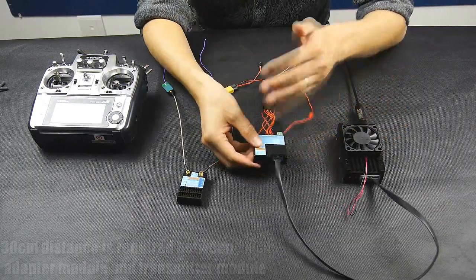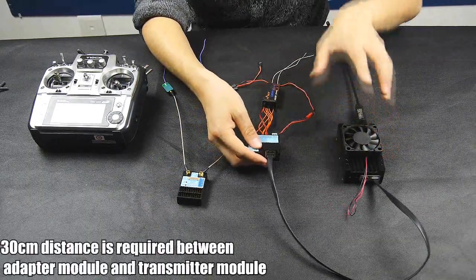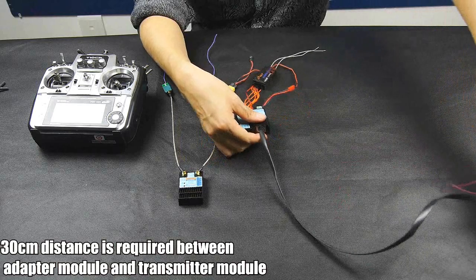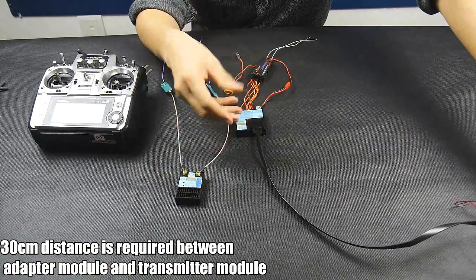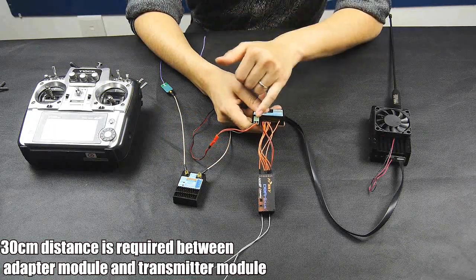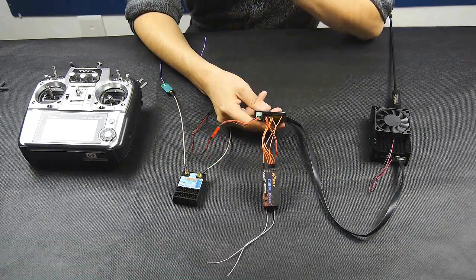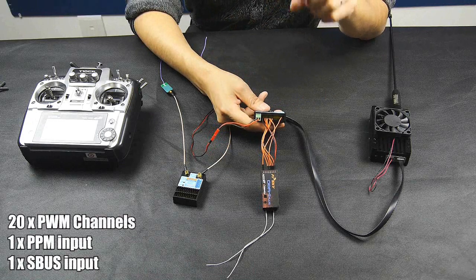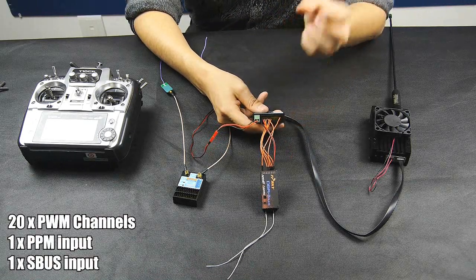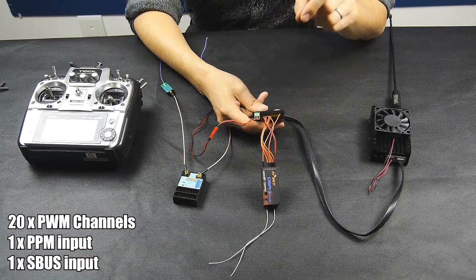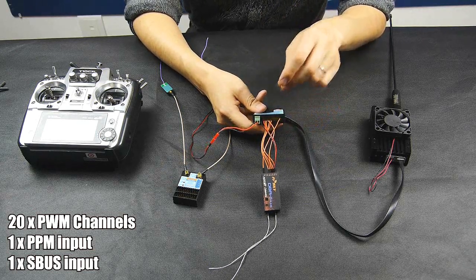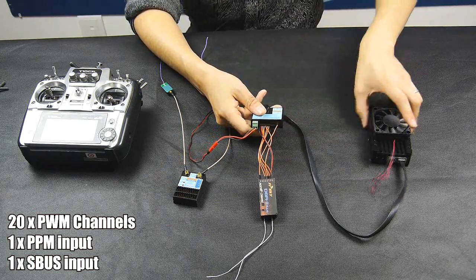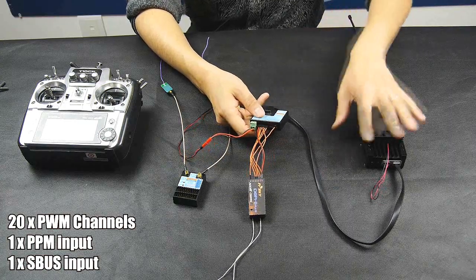So it's the adapter module, which is connecting to the transmitter and they have to keep away for 30 cm to avoid any interference. The adapter module has 20 pins on it for 20 PWM signals, and also it has one S bus and one PPM signal on it. It also has some function pins to control the idle function and also other functions of this transmitter module.